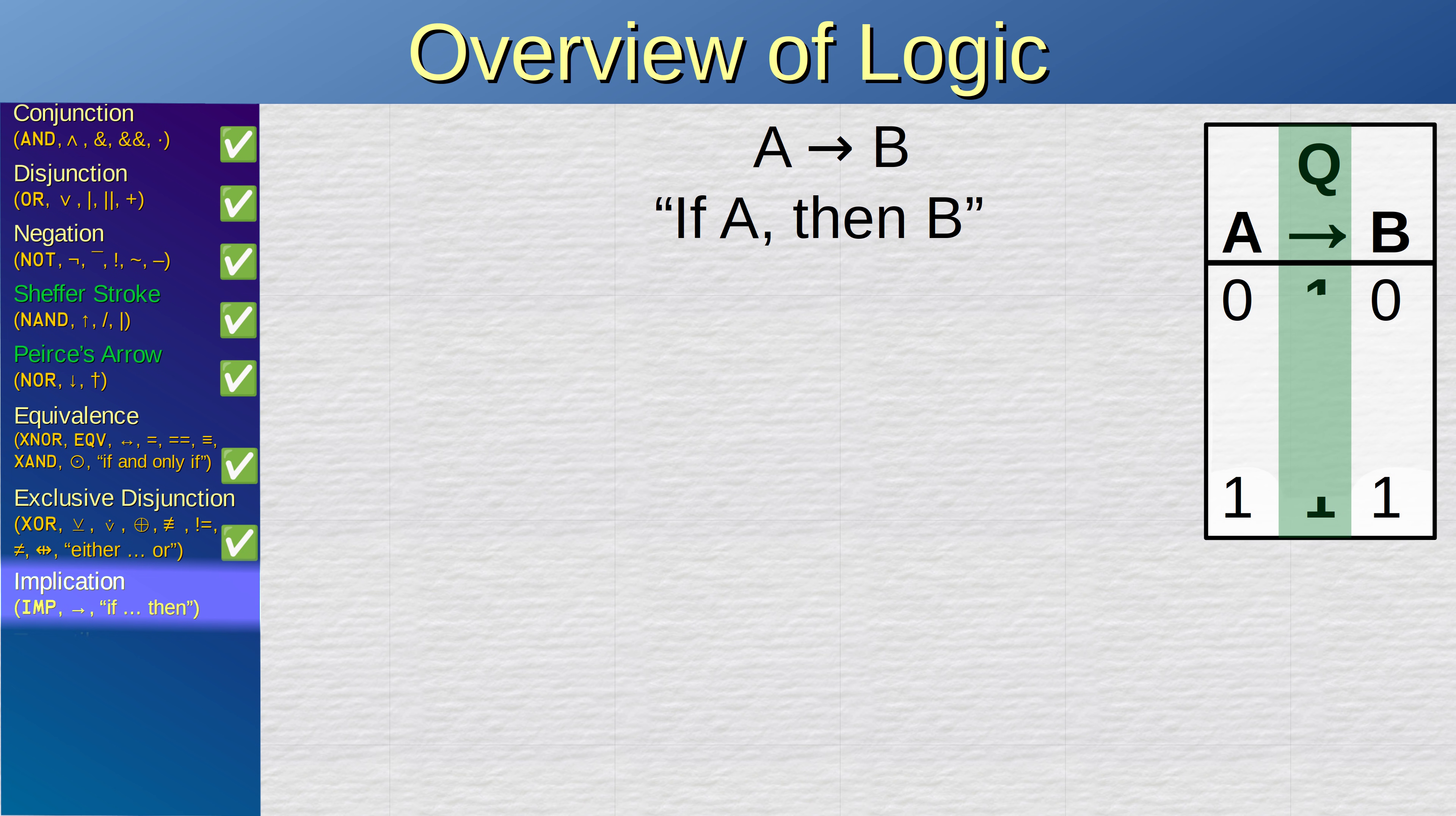Now what happens if A is true and B is not true? This is a clear contradiction with the implication. The implication says that if A, then B. However B is false, so the implication is false. Finally, what if A is false and B is true? In this case, the implication is true. Let me explain why, in plain English.